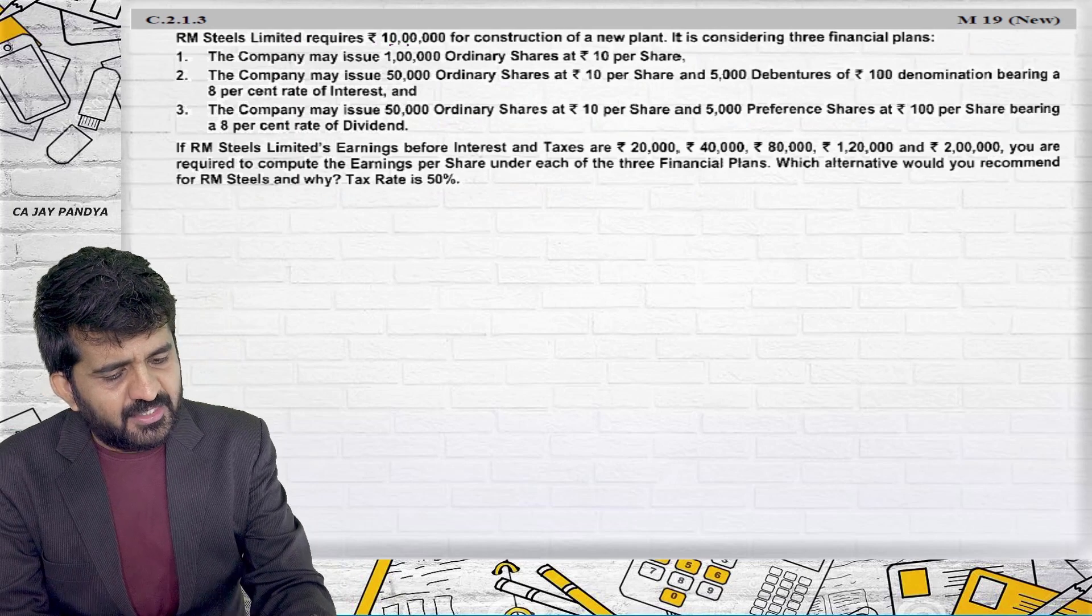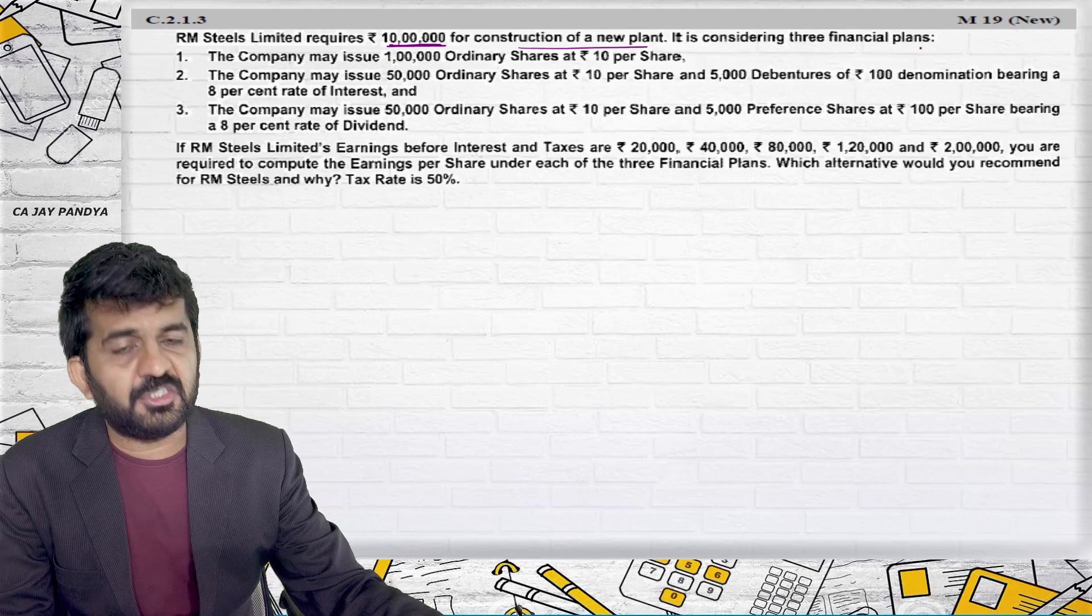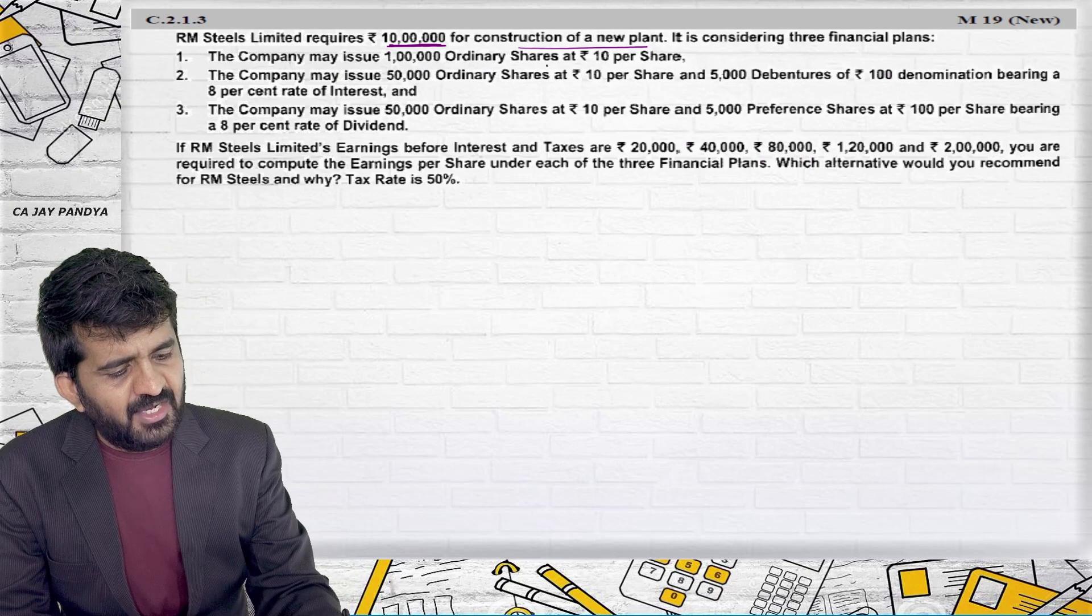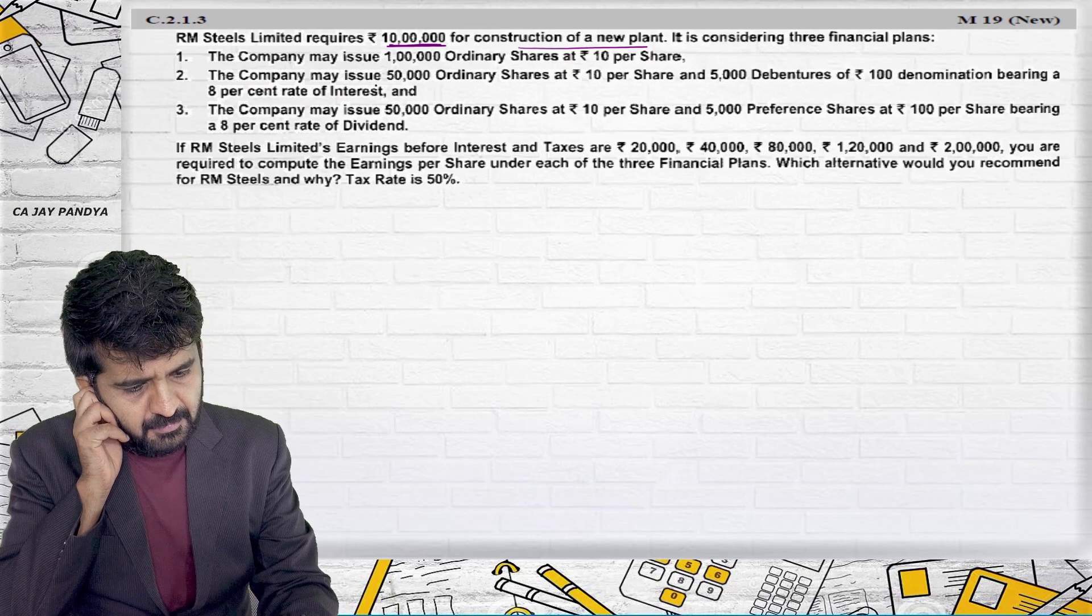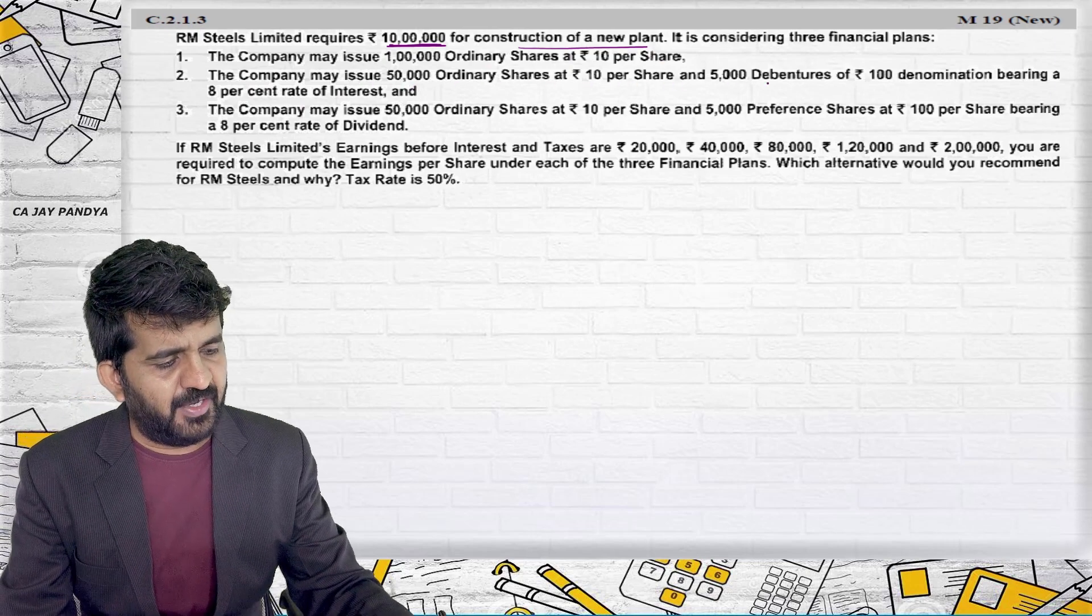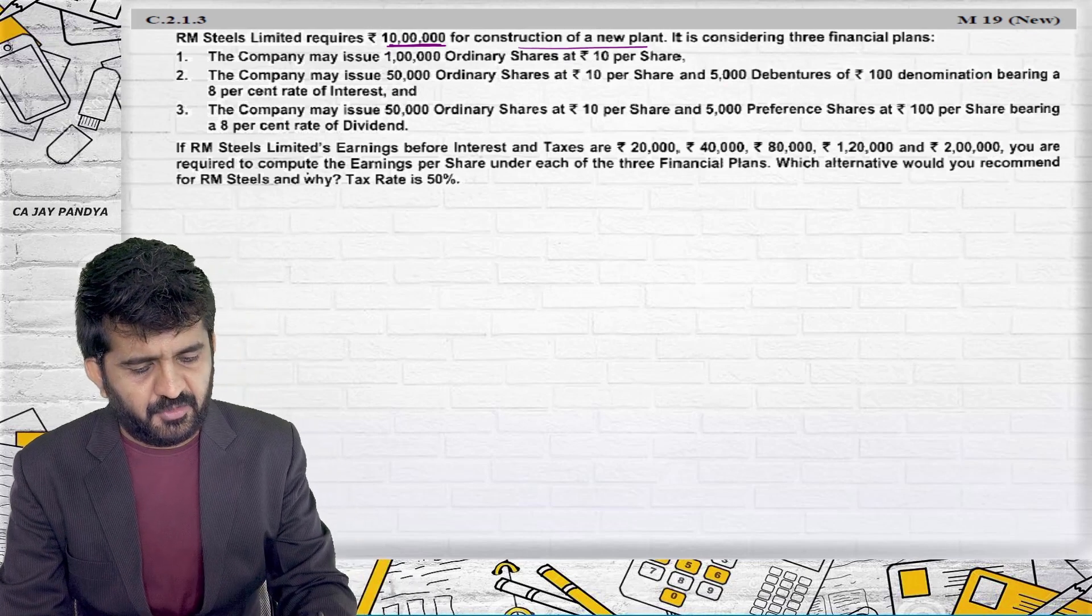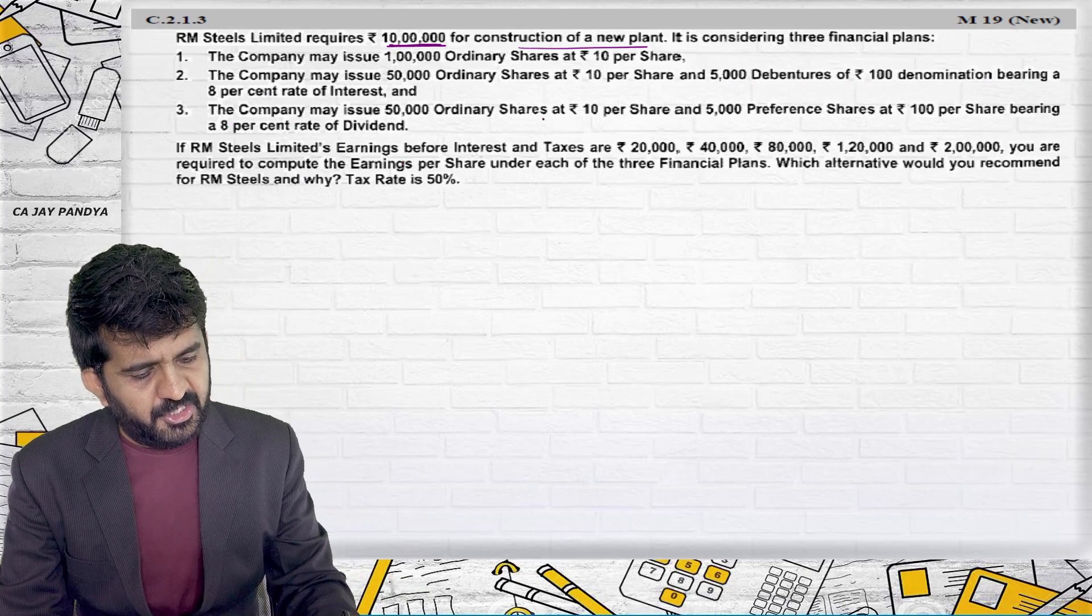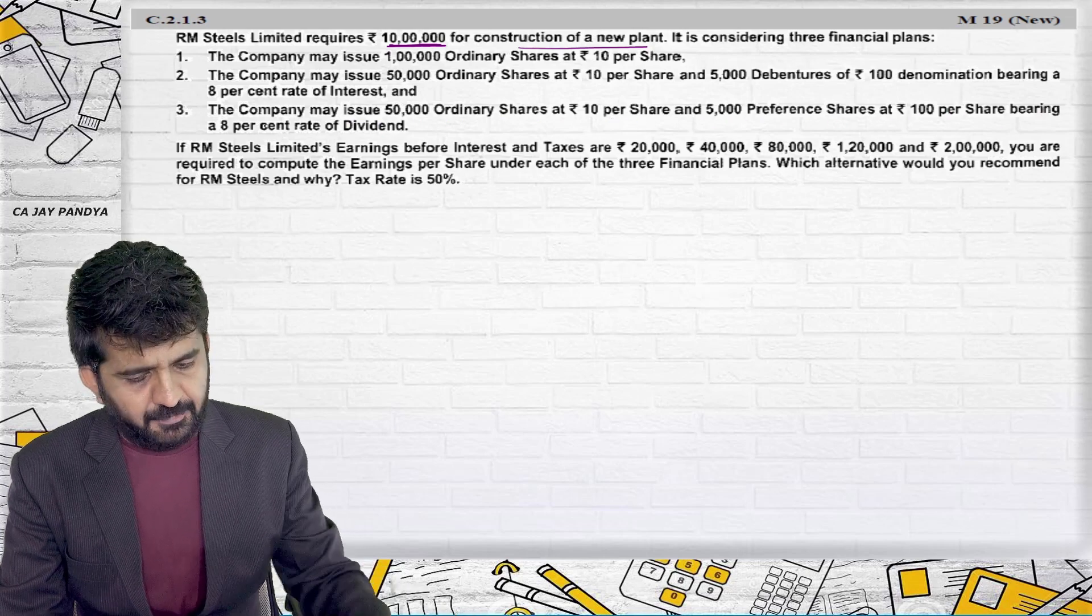RM Stills Limited requires Rs. 10 lakhs for construction of a new plant. It is considering three financial plans. The company may issue 1 lakh ordinary shares at the rate of Rs. 10 per share. The company may issue 50,000 ordinary shares at the rate of Rs. 10 per share, 5,000 debentures of Rs. 100 denomination bearing 8% rate of interest. The company may issue 50,000 ordinary shares of Rs. 10 each, 5,000 preference shares at the rate of 100 per share bearing 8% dividend.